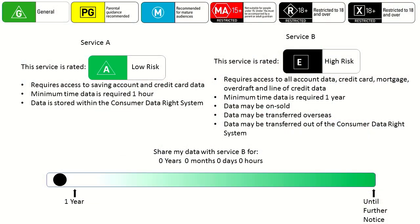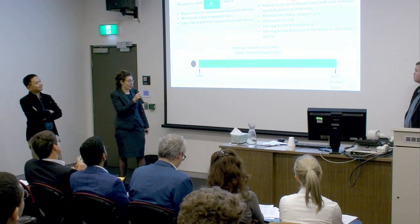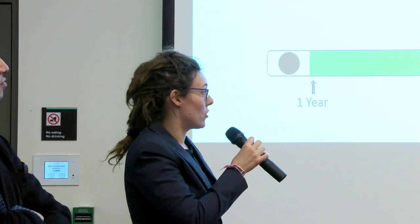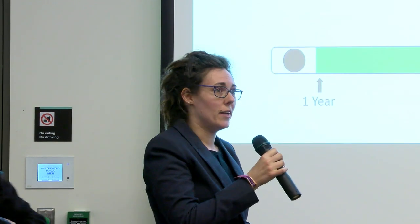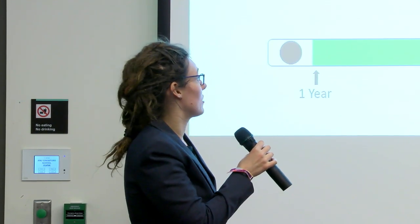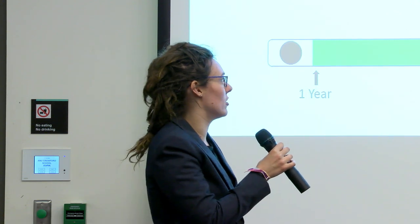Framing the individual's open banking data in a way that allows them agency over what they share and who they share it with — and by adding extra privacy protocols and settings — can help remove this sense of loss and help people see that their data is an asset that can work for them. As we've heard in the last couple of days, consumers generally feel that they don't understand what they're consenting to in terms and conditions, or the privacy implications of sharing their data. We propose implementing a series of classifications for registered providers similar to those used for film, literature, and video games. A ranking from A to E could be given based on risk factors such as which data they require access to, the minimum period of access required for the service's functionality, and additional risk factors such as whether the data may be on-sold, or whether it remains in the Consumer Data Right system or is transferred out.